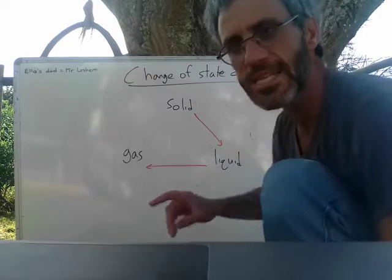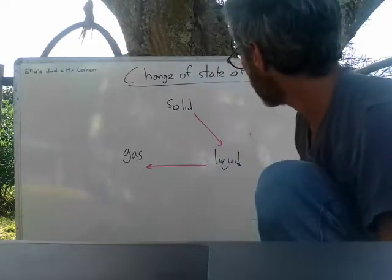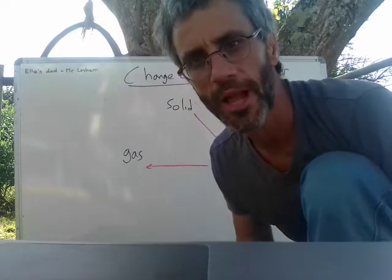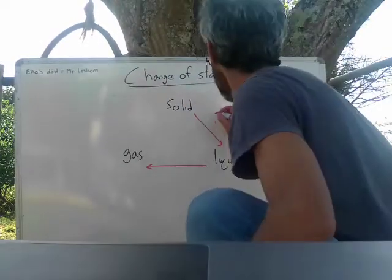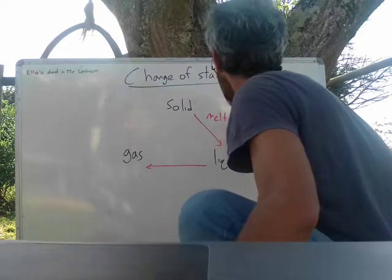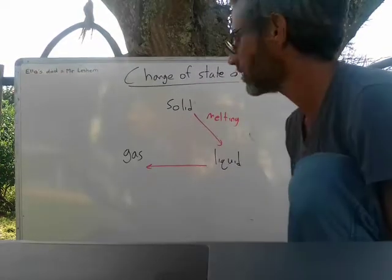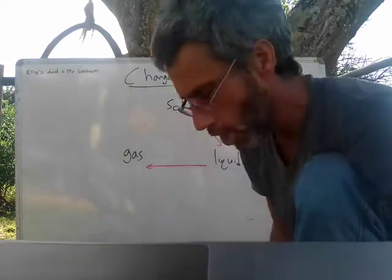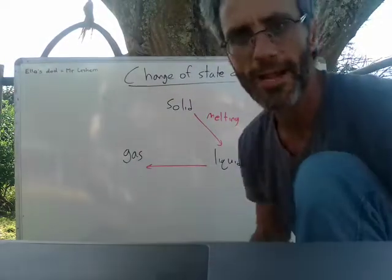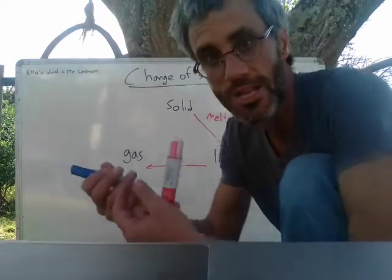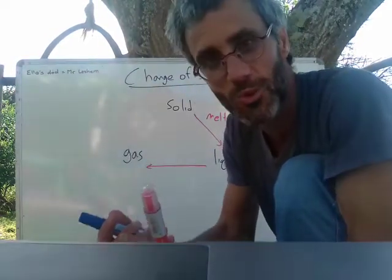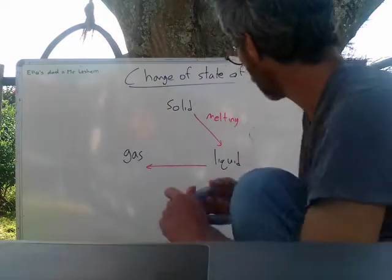So I've got solid, liquid and gas. When we heat up a solid we get liquid — what do we call that? Correct, melting. So we melt solid to become liquid. What about if we go the other way around, from liquid back to solid — like when we take water and turn it into ice? What do we call that? Correct, freezing.